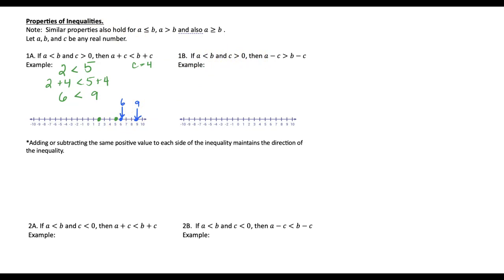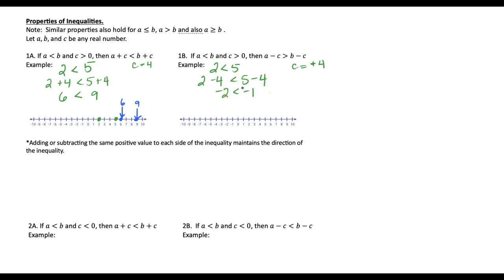Keeping 2 is less than 5, what if I subtract a value? Using c of 4: 2 minus 4 is negative 2, and 5 minus 4 is positive 1. Looking at where our 2 was on the left compared to 5, once we move everything left four spots by subtracting, we end up with negative 2 on the left and 1 on the right. Our negative 2 stayed on the left. So adding or subtracting the same positive value to each side of the inequality maintains the direction of the inequality.